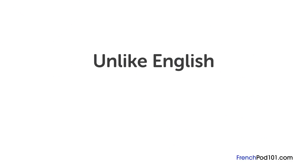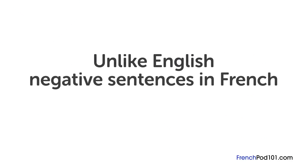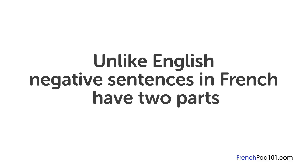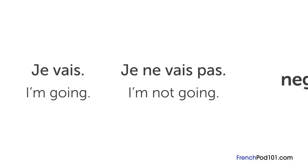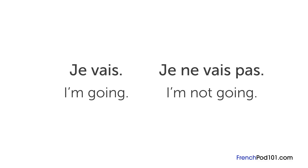Unlike English, negative sentences in French have two parts. The most basic negative sentences use ne and pas, and put the verb in between them. For example, 'I'm going' is je vais, so 'I'm not going' is je ne vais pas.